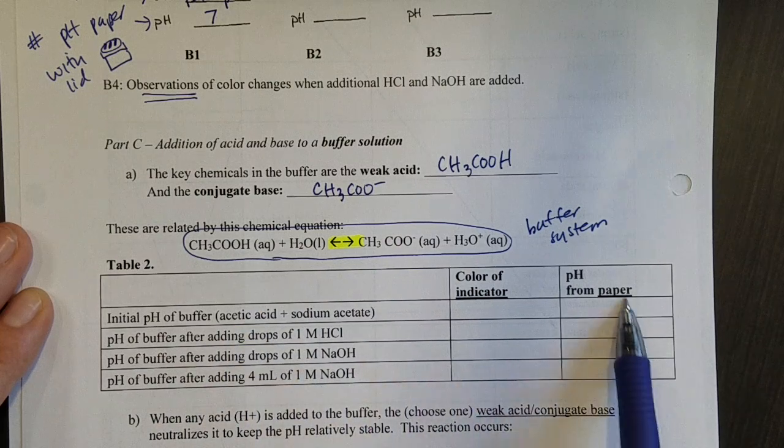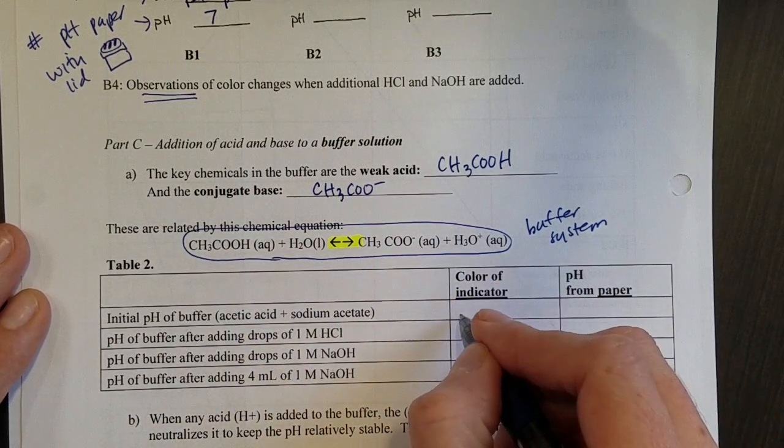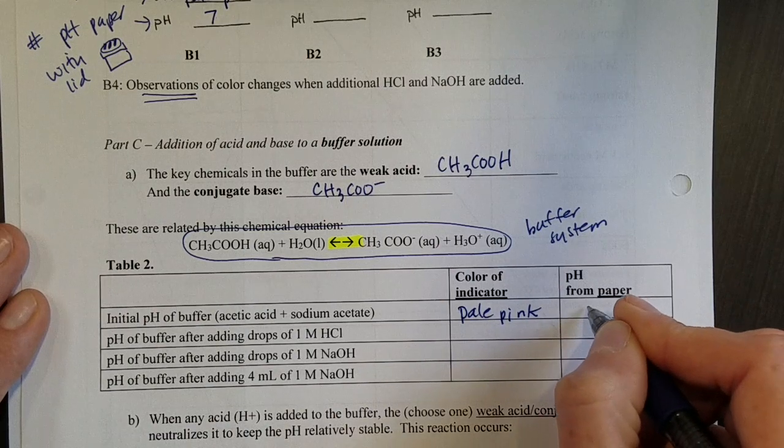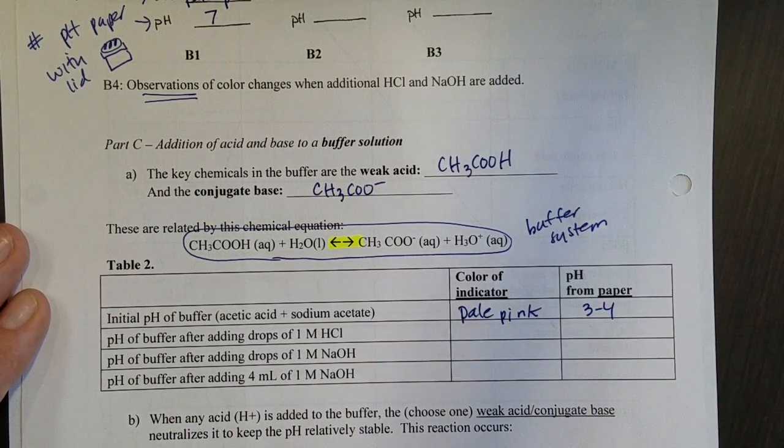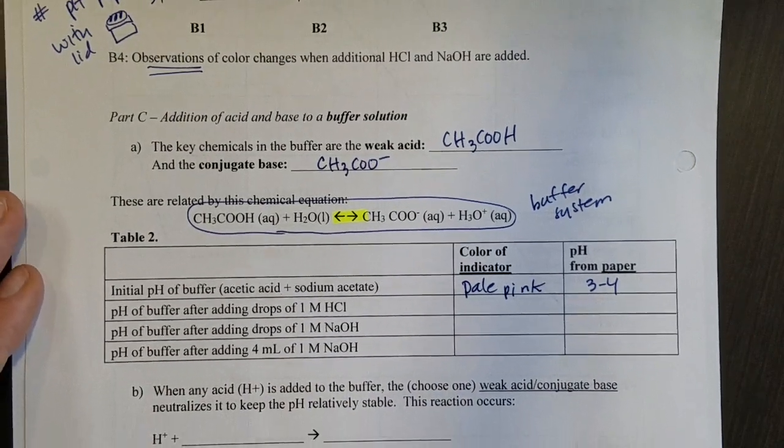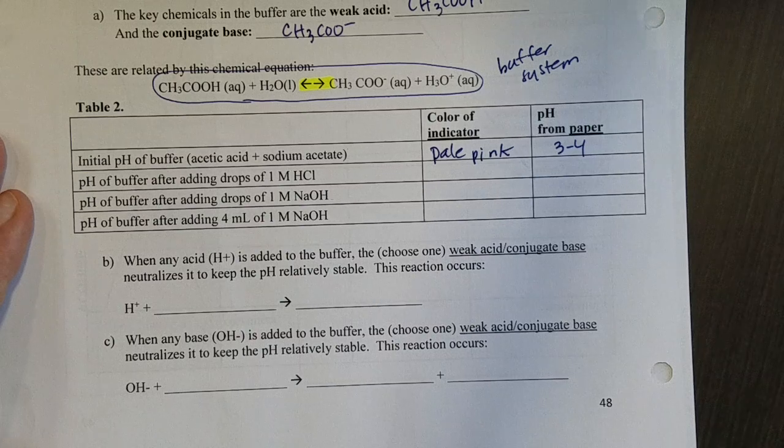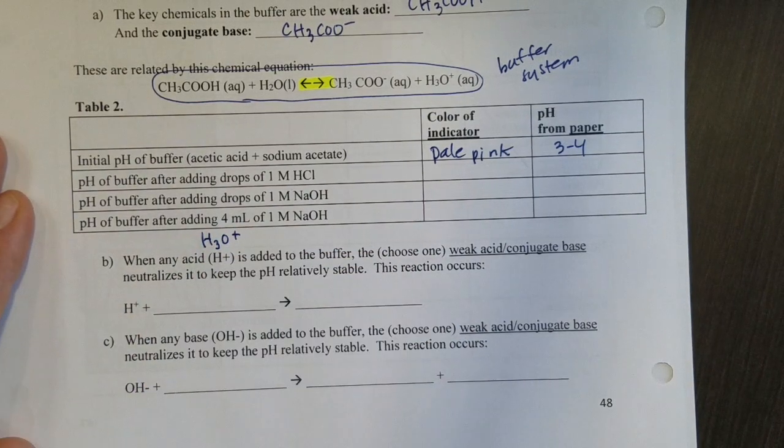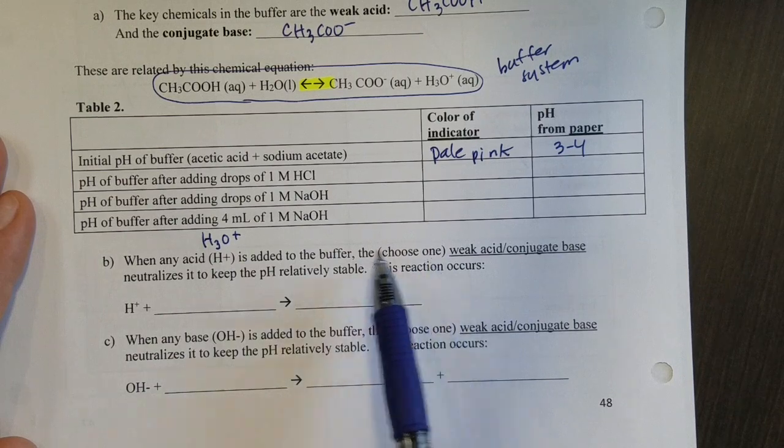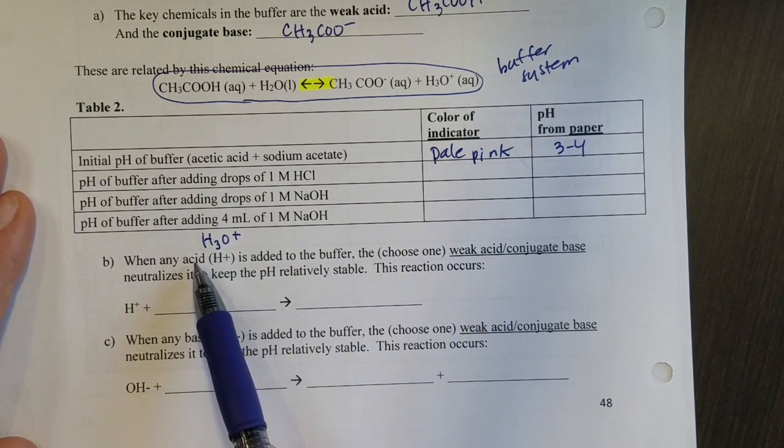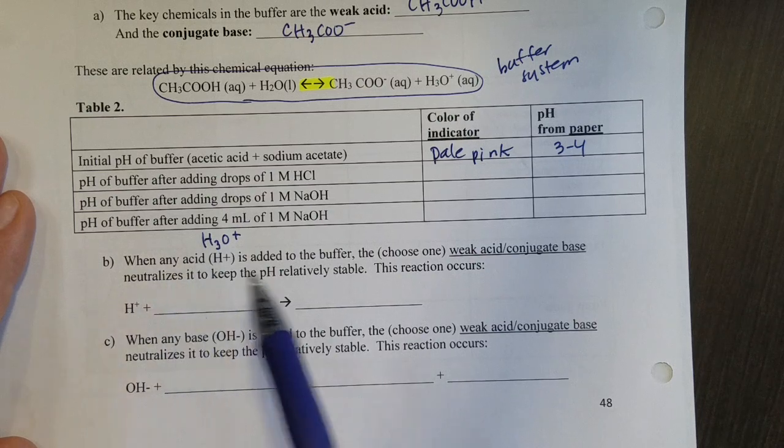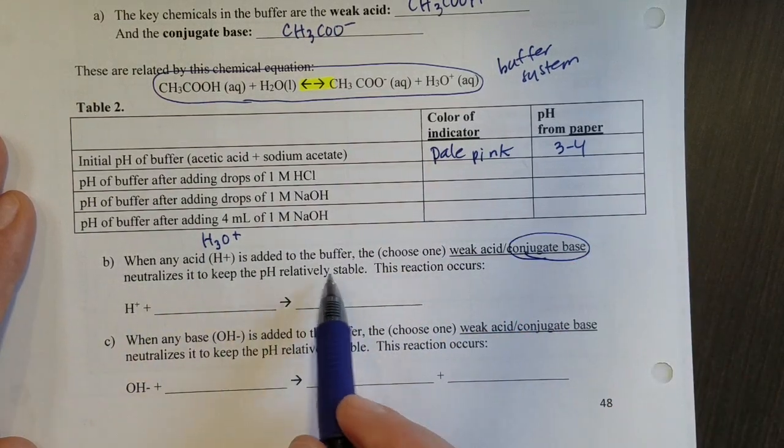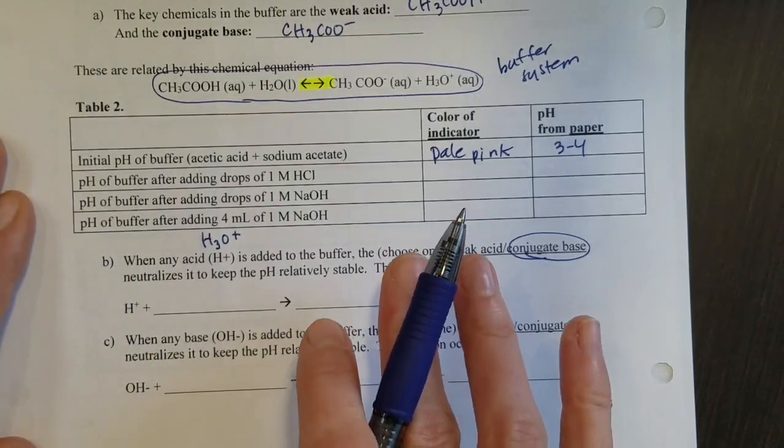So all of this data here you're going to collect from watching the video. Again here we want the color of the indicator or of the solution so that might be a pale pink here and the pH I think you'll see is right around three to four so a number here and a color here. So you'll take those observations but I want you to think here about what's happening in the buffer. So when any acid H+ or we could substitute for H+ H3O+ because those are used interchangeably we want to think about what's going to neutralize an acid that's added. So opposites neutralize each other so if I have an acid it's going to get neutralized by the conjugate base and that's what keeps the pH relatively stable.